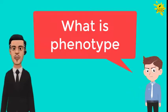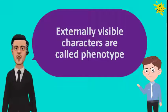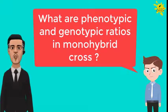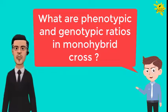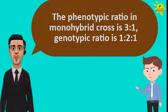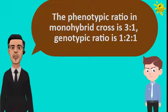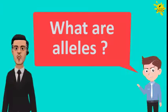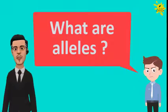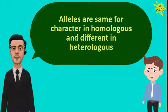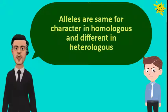What is phenotype? Externally visible characters are called phenotype. What are phenotypic and genotypic ratios in monohybrid cross? Phenotypic ratio in monohybrid cross is 3:1. The genotypic ratio is 1:2:1. What are alleles? Alleles are same for a character in homologous and different in heterologous.